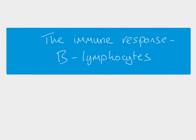In this video we're looking at the immune response and in particular the B lymphocytes or B cells. These are cells that are produced and also mature in the bone marrow, and then once they've matured they leave the bone marrow and spread around the body, particularly in the lymph nodes and in the spleen.